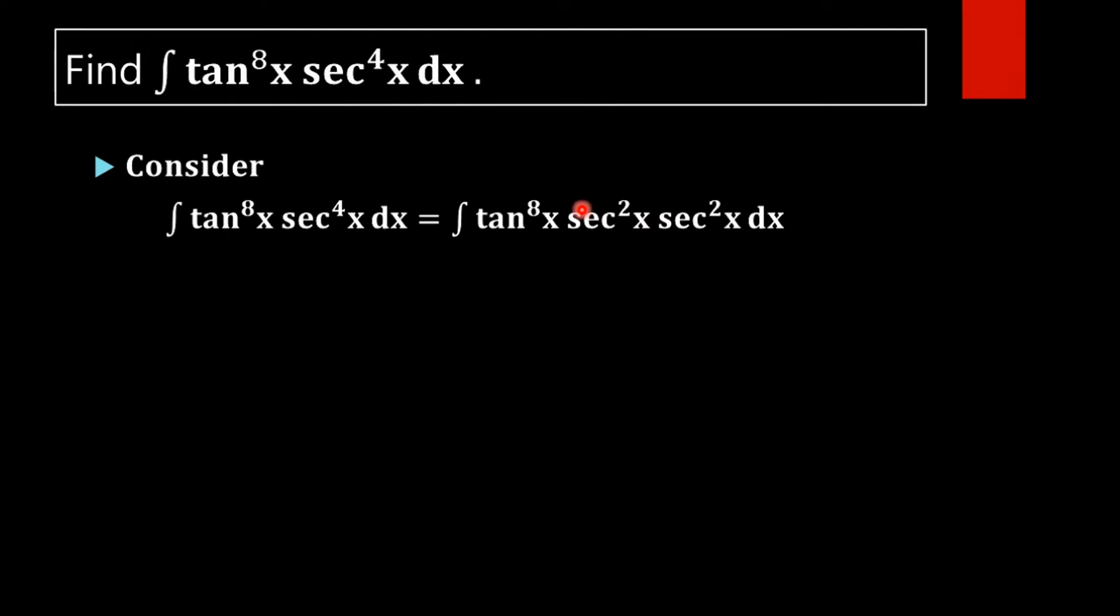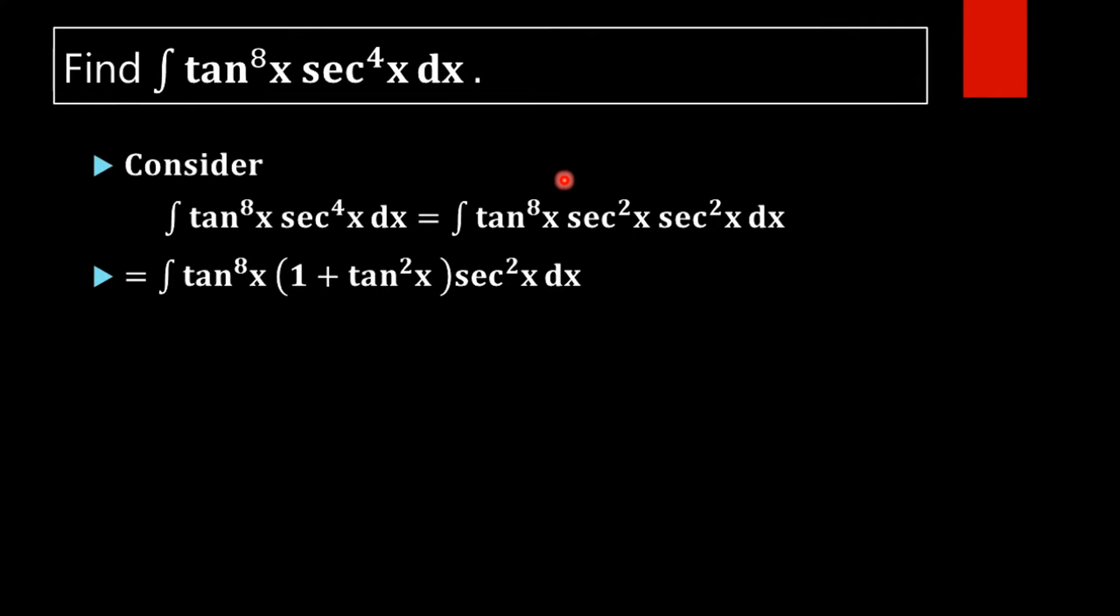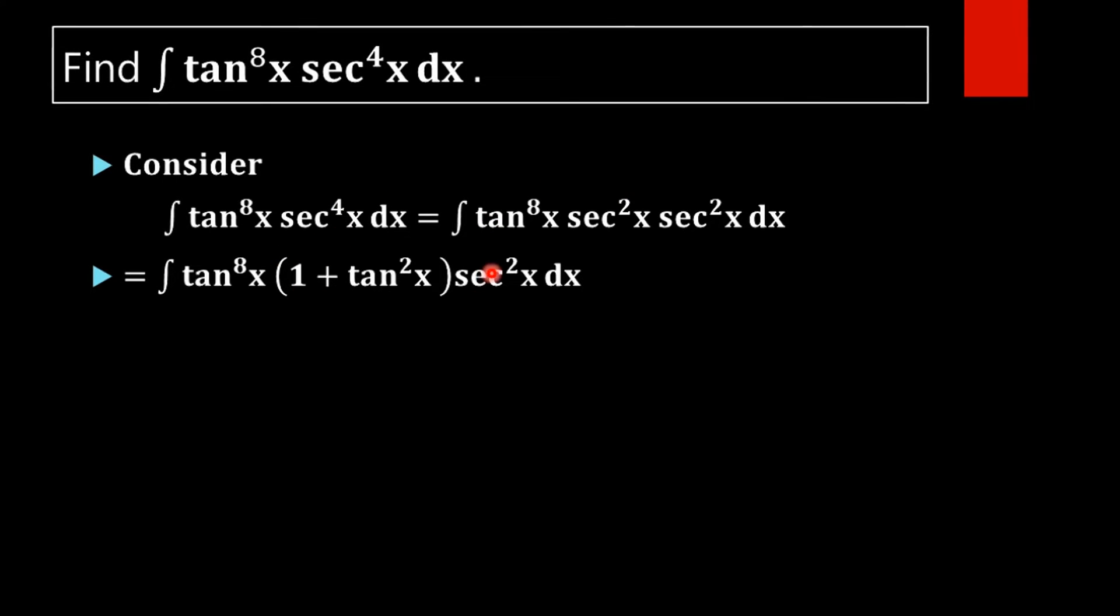Then we are rewriting sec^2(x) in terms of tan x. Using the trigonometric identity 1 plus tan^2(x) equals sec^2(x), we are rewriting sec^2(x) as 1 plus tan^2(x) into sec^2(x) dx.